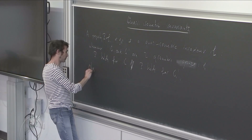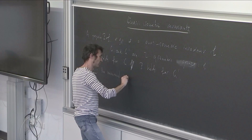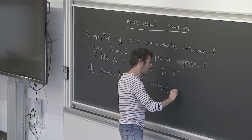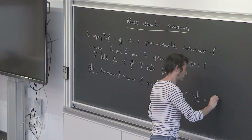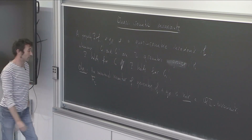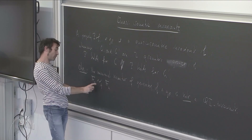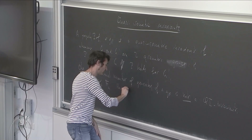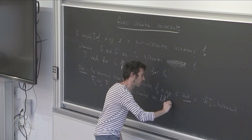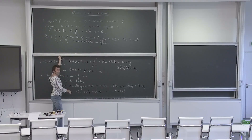Let me start with the first observation: the minimum number of generators of a group is not a QI invariant. As I told you last time, the free group on two generators is quasi-isometric to the free group on n generators, and they have different minimum numbers. So it's not a QI invariant. In general, it's a hard problem to prove that a property is invariant.